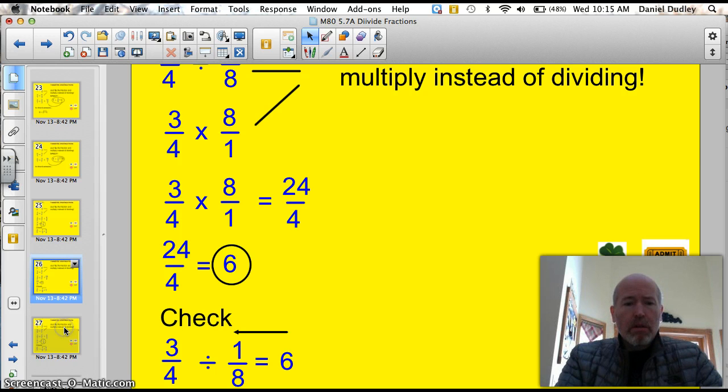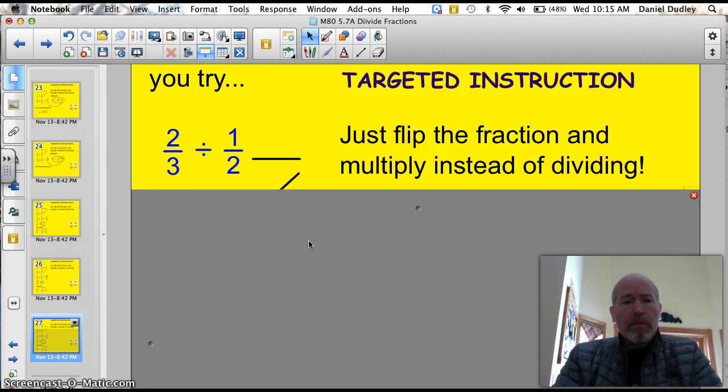Try this one. Last one before our ticket. Two-thirds divided by 1 half. Just go ahead. Did you flip it? Did you multiply instead of dividing? Isn't that cool? Let's see how you did.